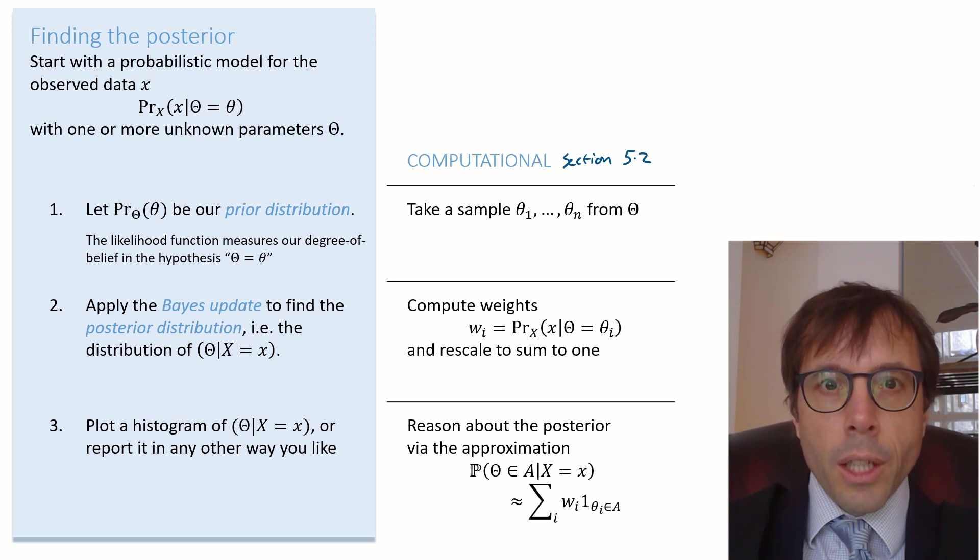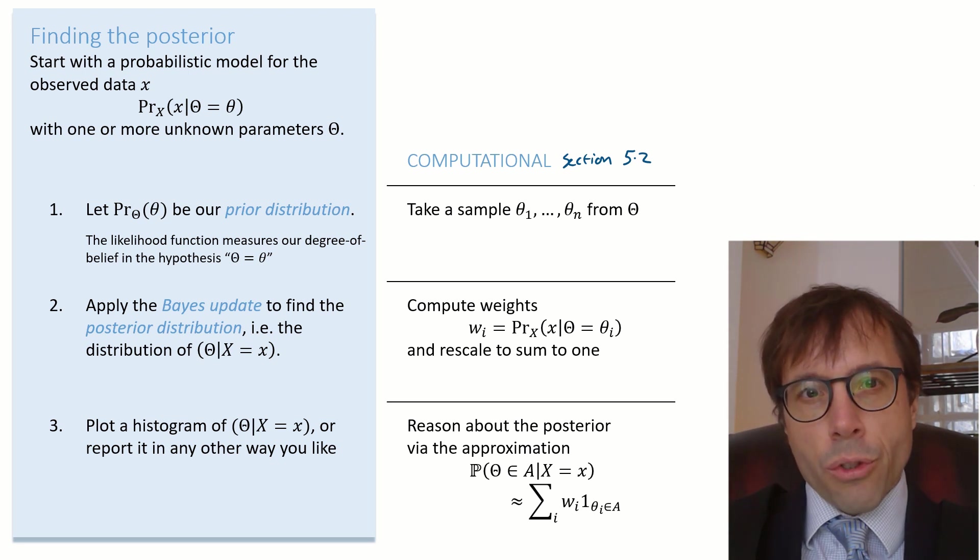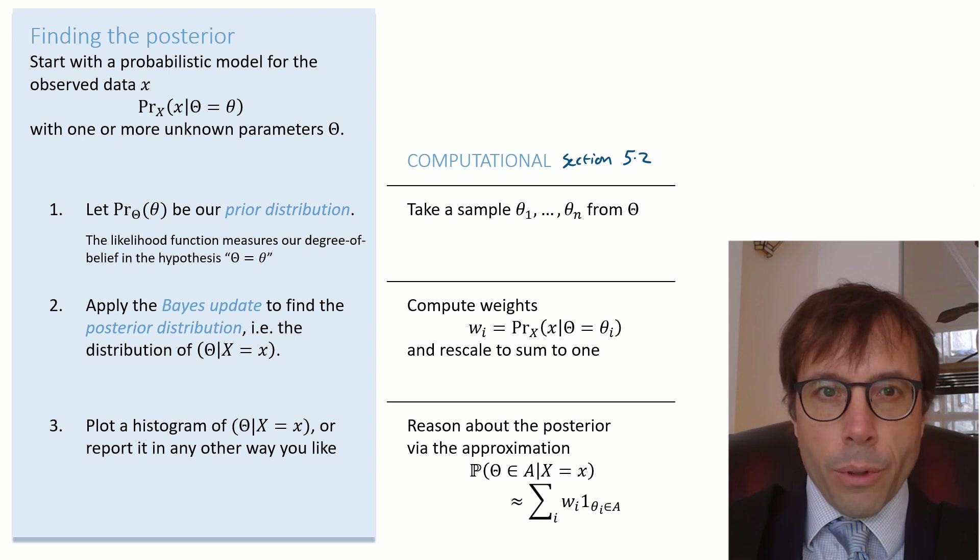For step three, we can use these weights to estimate posterior probabilities. Here's a formula. But in section 5.2, we saw a code snippet for plotting a histogram of the posterior distribution making use of these weights. And that's probably more useful than the formula.